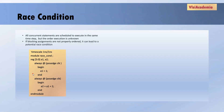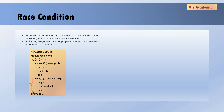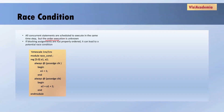There might be a possibility that one simulator executes the first always block first, and another simulator executes the second always block first. We have a dependency: we want the first block to execute first so that the value of A1 is updated and can be used to update A2. But if some simulator executes the second block first, it won't give the desired result. This is called a race condition — where two concurrent statements are scheduled to execute in the same time step but the order of execution is unknown. If blocking assignments are not properly ordered, it can lead to a potential race condition.